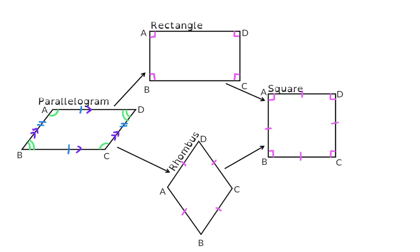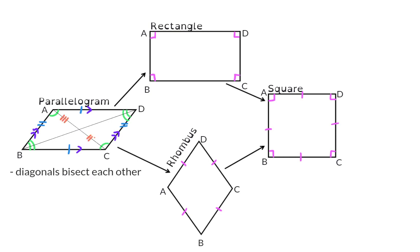Now let's add the properties of the diagonals. The two diagonals of a parallelogram are not equal in length, but they do bisect each other, meaning they divide each other into two equal parts. The diagonals of a parallelogram do not intersect perpendicularly, meaning the angles formed at the intersection are not 90 degrees.